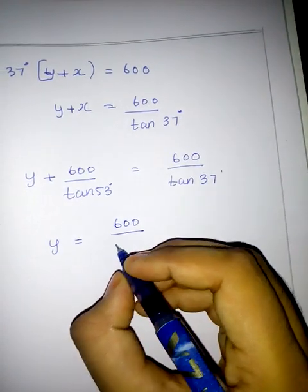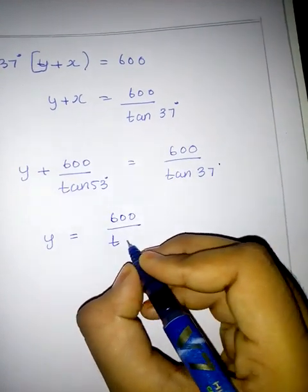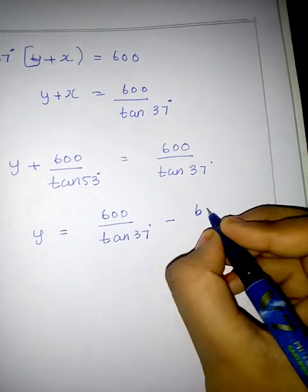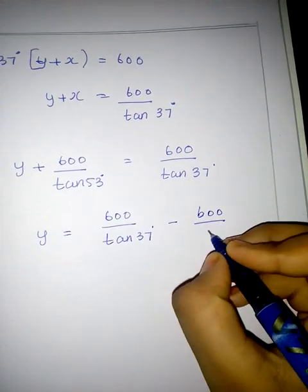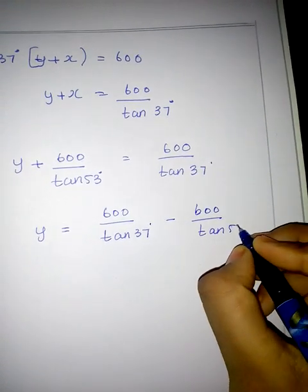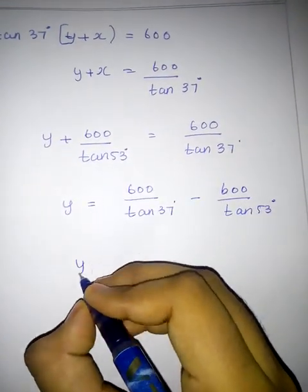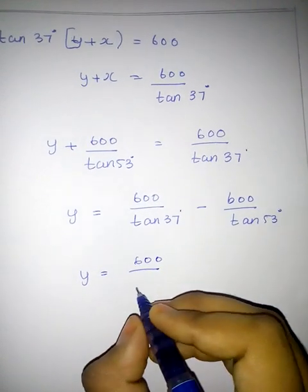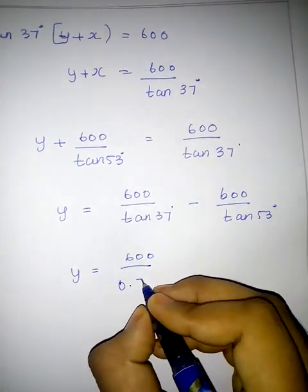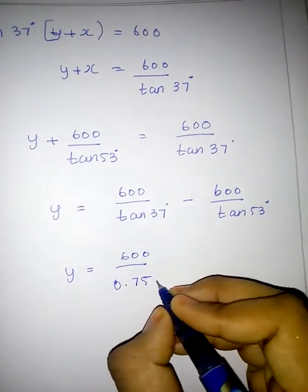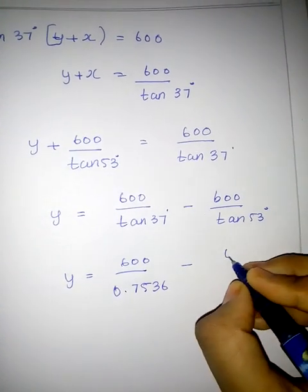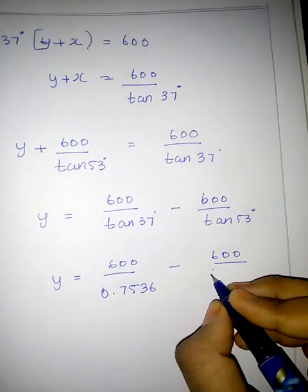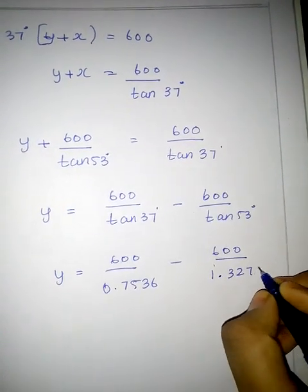Therefore y is equal to 600 divided by tan 37 degrees minus 600 divided by tan 53 degrees. That is 600 divided by 0.7536 minus 600 divided by 1.3270.